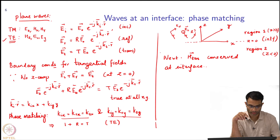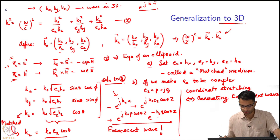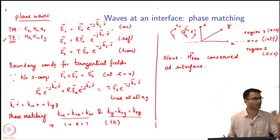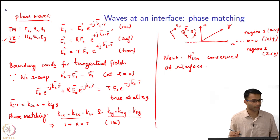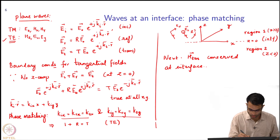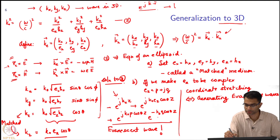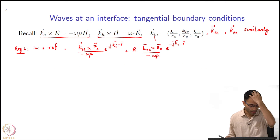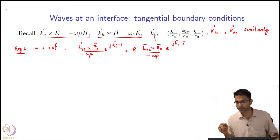We took e to the plus j k_r. We will stick to this convention and make a few changes just to be consistent. We are choosing time convention to be e to the minus j omega t. If we choose this, these terms will all become plus.